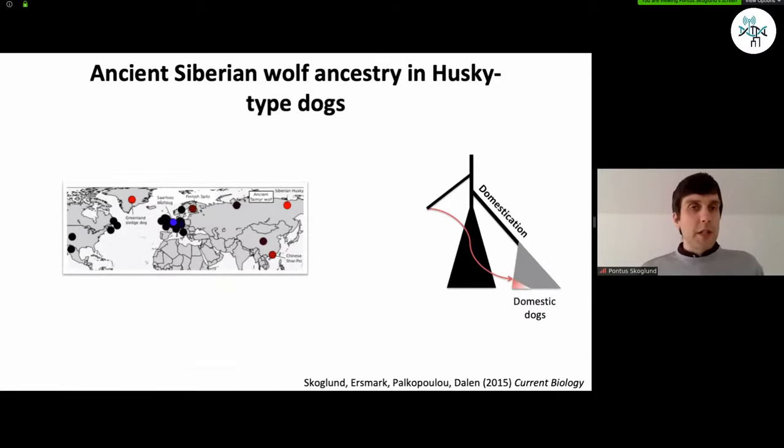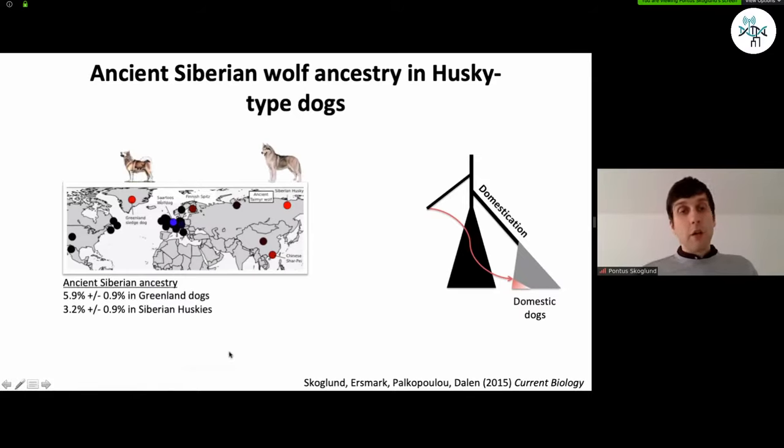But one thing that's interesting about Ice Age wolves is that it seems that some of them may have contributed part of the ancestry of present-day dogs, which is something we found evidence of already in 2015 in a preliminary paper we did on a single ancient wolf genome that was 35,000 years old. And this was evidence of some ancestry of a few percent in present-day husky-type dogs like the Siberian husky that may trace back to this 35,000 Ice Age wolves in Siberia at the time.